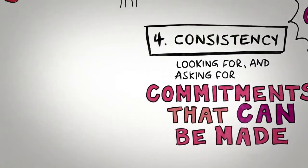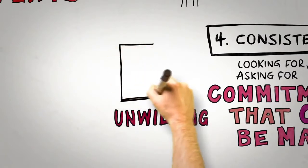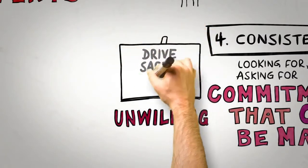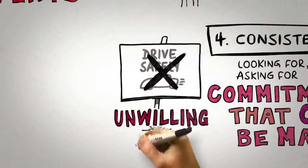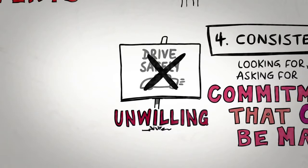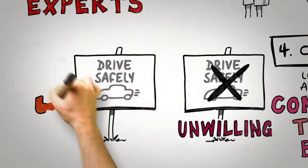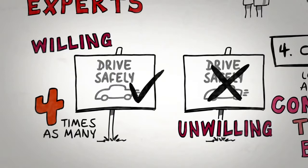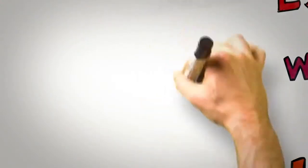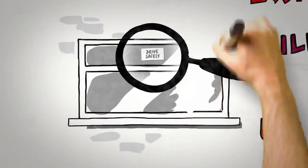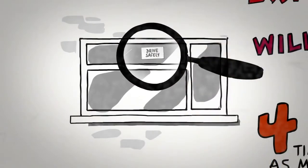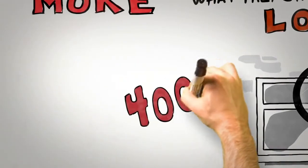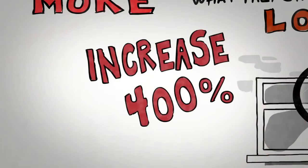Consistency is activated by looking for and asking for small initial commitments that can be made. In one famous set of studies, researchers found, rather unsurprisingly, that very few people would be willing to erect an unsightly wooden board on their front lawn to support a Drive Safely campaign in their neighborhood. However, in a similar neighborhood close by, four times as many homeowners indicated that they would be willing to erect this unsightly billboard. Why? Because 10 days previously, they had agreed to place a small postcard in the front window of their home that signaled their support for a Drive Safely campaign. That small card was the initial commitment that led to a 400% increase in a much bigger but still consistent change.